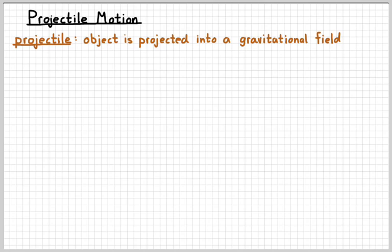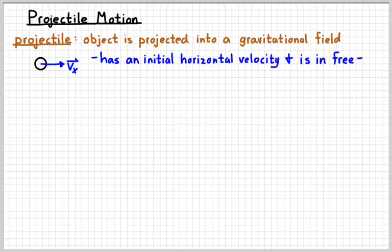What a projectile is, is an object that has been projected into a gravitational field. So basically something that's moving forward and is in the Earth's gravity. It's got initial horizontal velocity and is in free fall. So we've studied things that are moving forward and we've studied things that are in free fall. Now we're going to do something that's doing both at the same time.